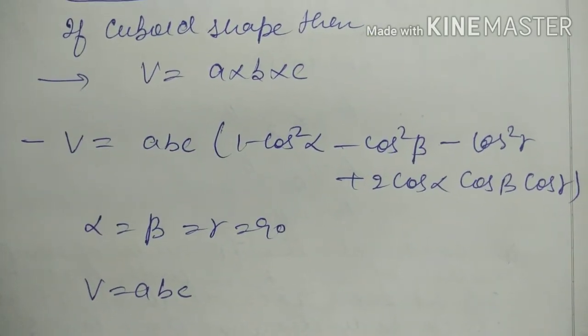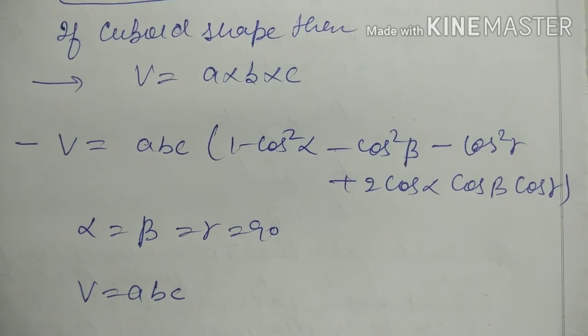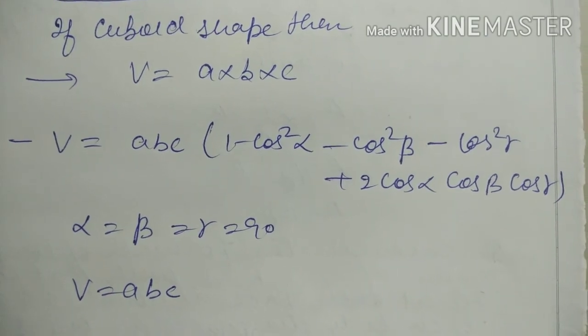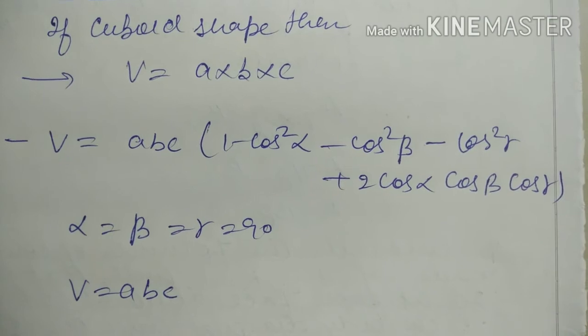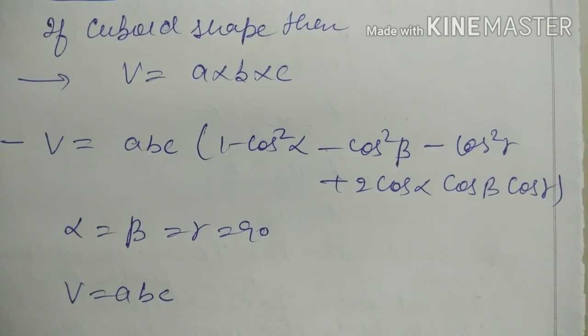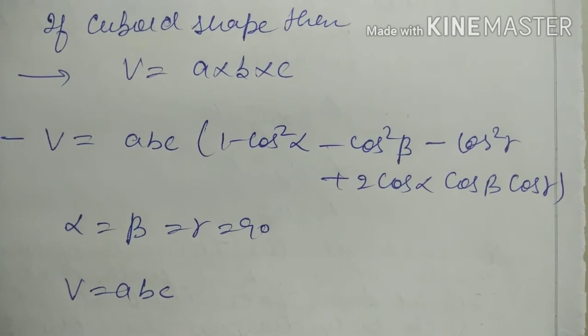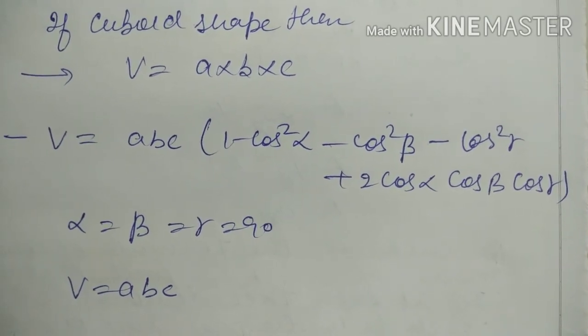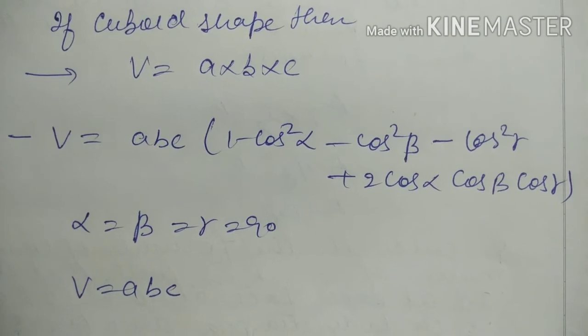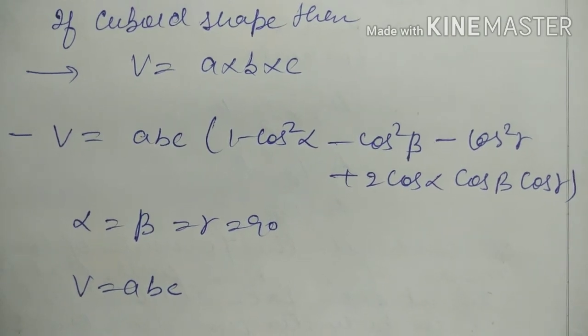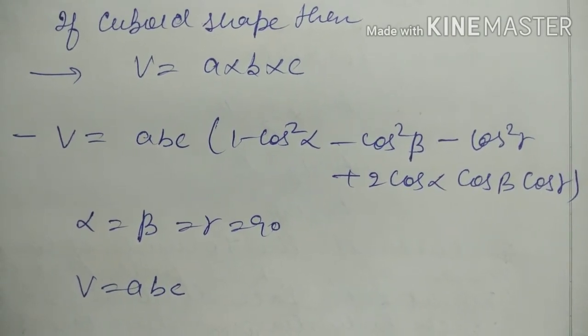Now if it's any type of crystal, then V equals ABC times square root of (1 minus cos squared alpha minus cos squared beta minus cos squared gamma plus 2 cos alpha cos beta cos gamma). If alpha, beta, gamma are 90 degrees, then V equals ABC. This formula can be used for any type of crystal or any type of angle.